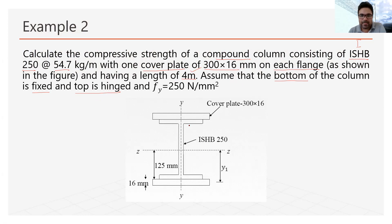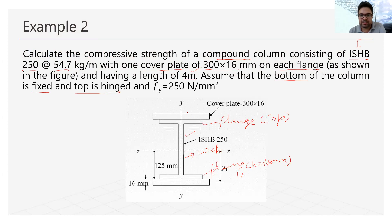In the diagram, you can see the I-section with the top flange, the web, and the bottom flange. This I-section is provided with a cover plate on the top flange and also on the bottom flange. The size of the plate is 300 mm wide and 16 mm thick, and both plates have the same size.